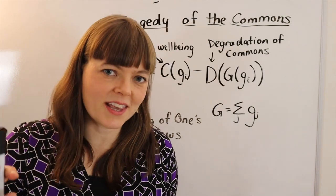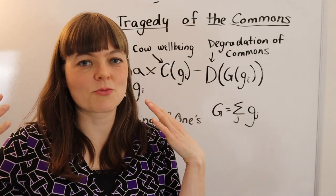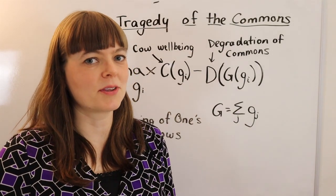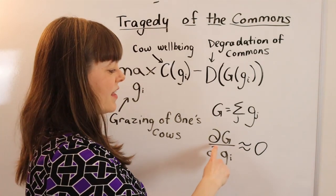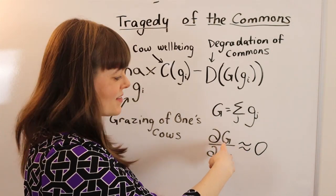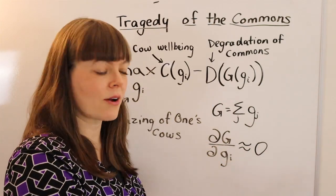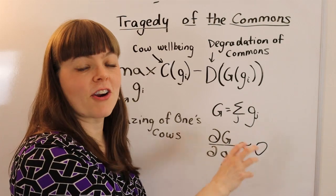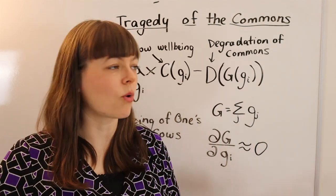But the trick here is that we have a drop-in-the-bucket problem. We're going to represent that drop-in-the-bucket problem using calculus. Specifically, the elasticity of the total amount of cow grazing on the commons with respect to the amount of grazing that you allow your cows to do is very, very small. Your cows don't graze that much relative to the whole.